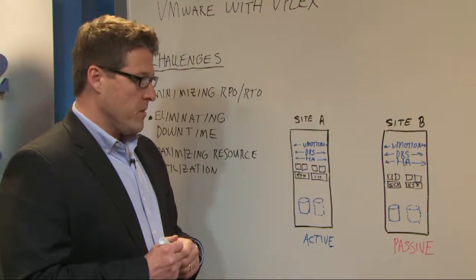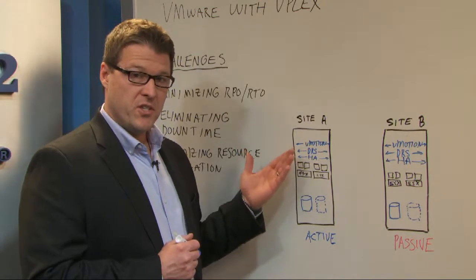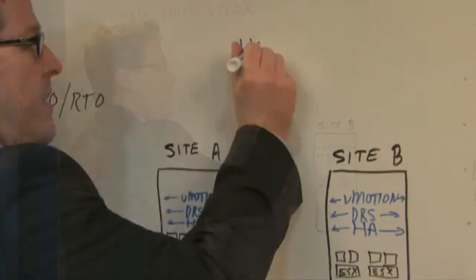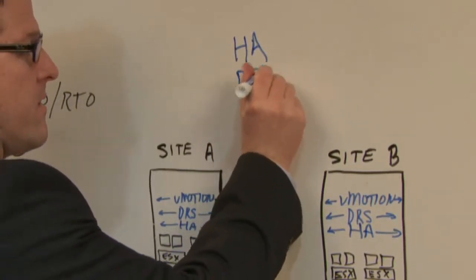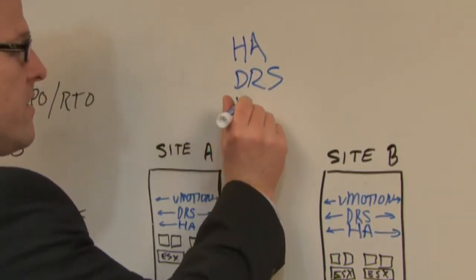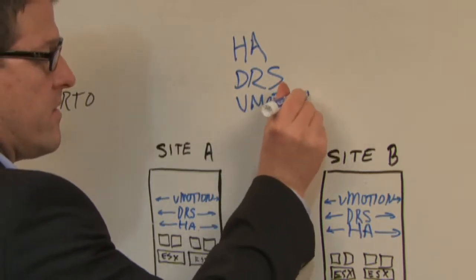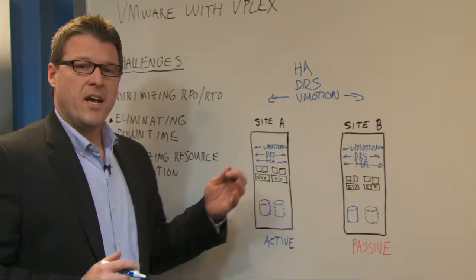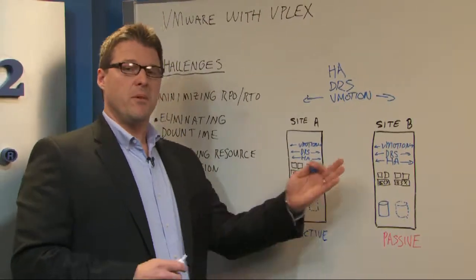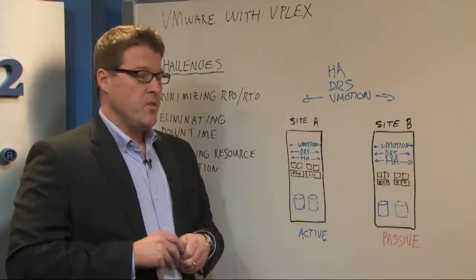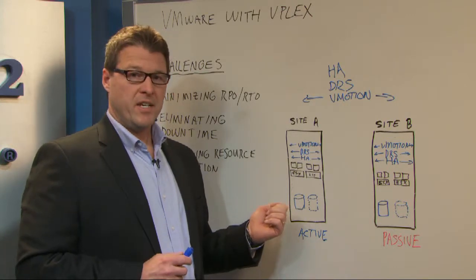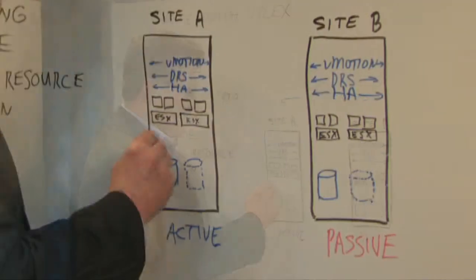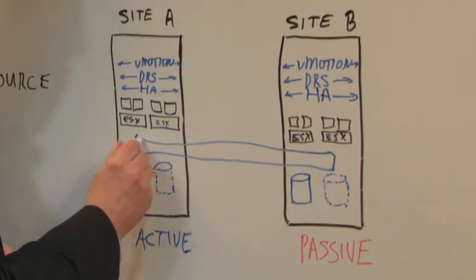With VPLEX, what we're able to do is take these capabilities that I've shown you for Site A and Site B, and now provide HA, DRS, and vMotion across these sites. Now capabilities that were delivered within a single site can now be delivered across sites, giving you the ability to non-disruptively move applications not only within one data center, but across. In addition, the storage layer is extended across sites by VPLEX.